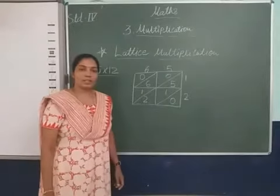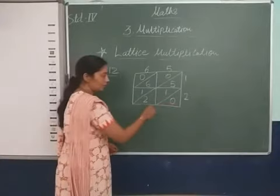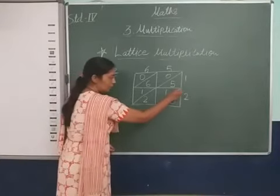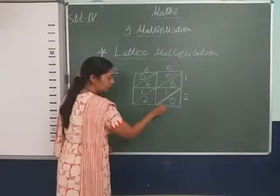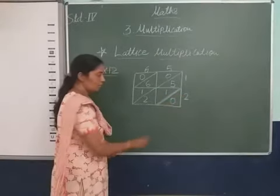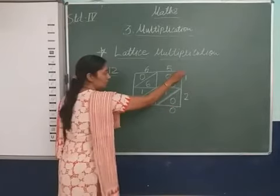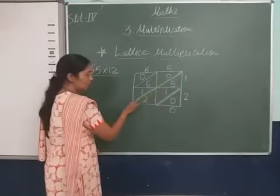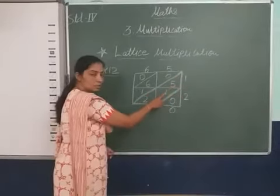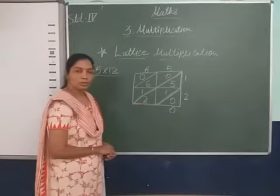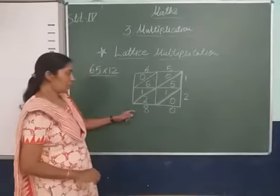Now the next step, what we have to do? Sum of this lattice diagonal. This is one diagonal, you put here 0. Now the next diagonal we add: 5 plus 0 equals 5, 5 plus 2 equals 7. 6 plus 2 equals 8. We will write the number 8 here.